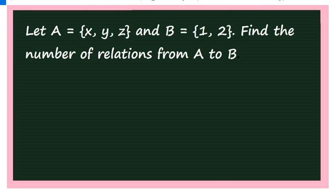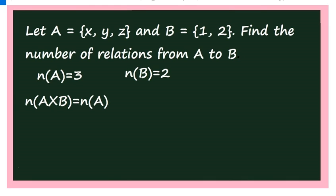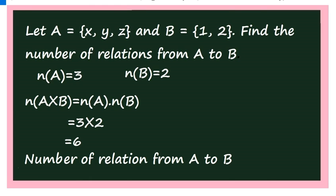Next question: let A = {x, y, z} and B = {1, 2}. Find the number of relations from A to B. The number of elements in A is 3, and in B is 2. So n(A × B) = 3 × 2 = 6. The number of relations from A to B equals the number of all subsets of A × B, which is 2^n = 2^6 = 64.